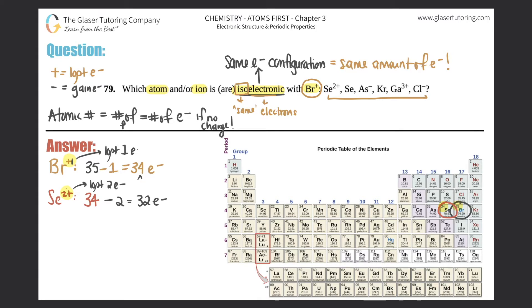Next one: Se. Well, this one has no charge. This is just an atom, and selenium just by itself is just 34 electrons because protons equal electrons. So this one would be isoelectronic with Br+, so we could circle this one.